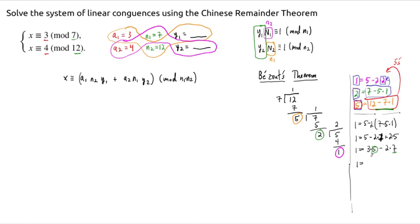So plugging that in, we have now 1 equals 3 times 12 minus 1 times 7 minus 2 times 7. And just regrouping, we have 3 times 12 minus 3 times 7 minus 2 times 7.